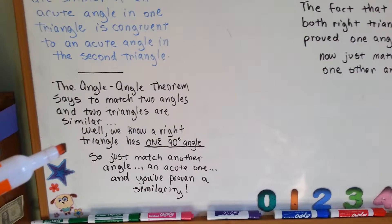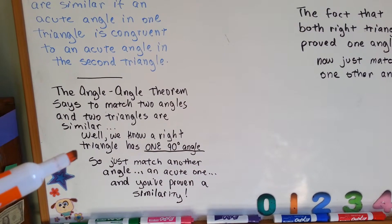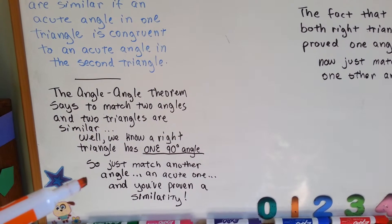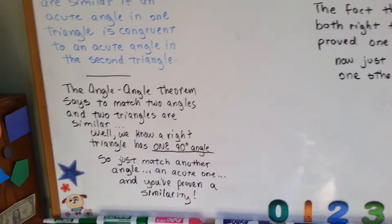Well, we know a right triangle has one 90-degree angle. So if you're starting off with two right triangles, just match another angle, an acute one, and you've proven a similarity.